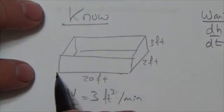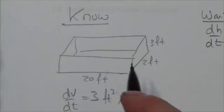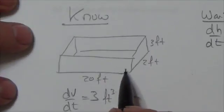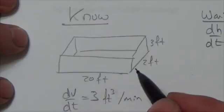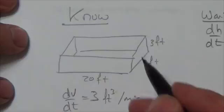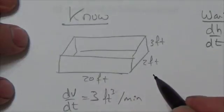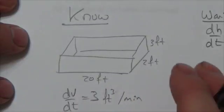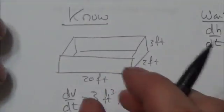So as you pour that in, the rectangular prism created by the water is going to have a length of 20 and a width of 2. And in fact, the only variable here is going to be the height. As you pour water in, the height's going to go up, but the width isn't going to change. The length isn't going to change.